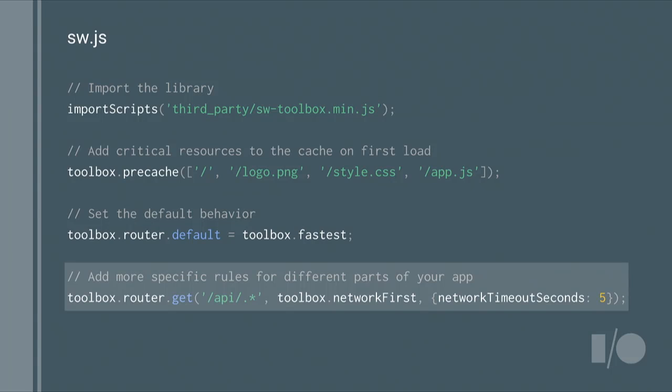You can also have different behavior for different parts of your site. Here we use toolbox.router.get to say that GET requests for things beginning with /api/ should use the network-first behavior. And we can pass in some options — I'll talk about what network-first is in a moment.